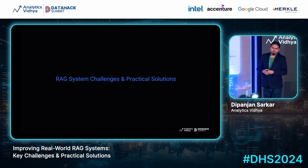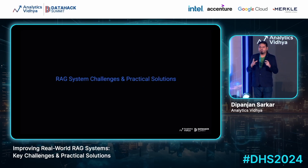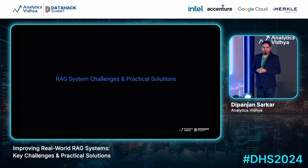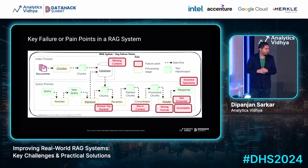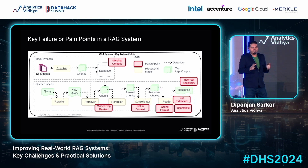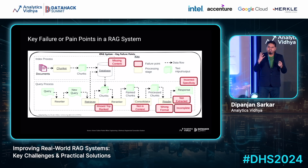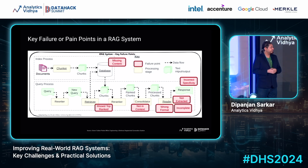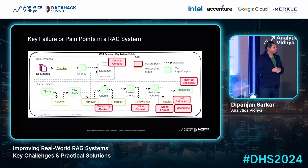Let's talk about the key system challenges when building a RAG system and ways to tackle these problems. My talk is inspired by the famous paper called 'The Seven Failure Points When Engineering a RAG System.' As you can see, this is a typical RAG workflow. The top part is basically the indexing — documents, preparation, embedding, and indexing into the vector database. The bottom part is your query and response generation process.